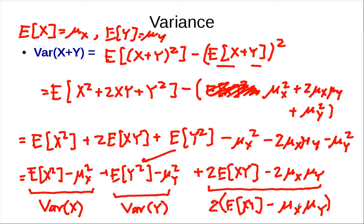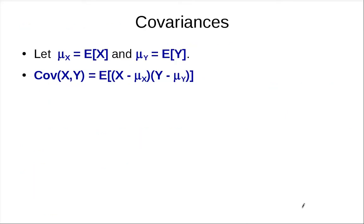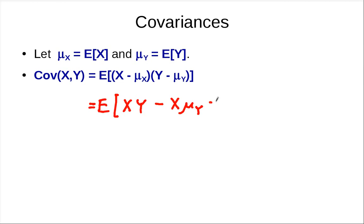This term appears a lot, so we're going to call it the covariance. The definition of covariance is: if we let mu_x be the expected value of x and mu_y be the expected value of y, then the covariance is the expected value of (x minus mu_x) times (y minus mu_y). If we expand this out, we get the expected value of x times y, minus x times mu_y, minus mu_x times y, plus mu_x mu_y.